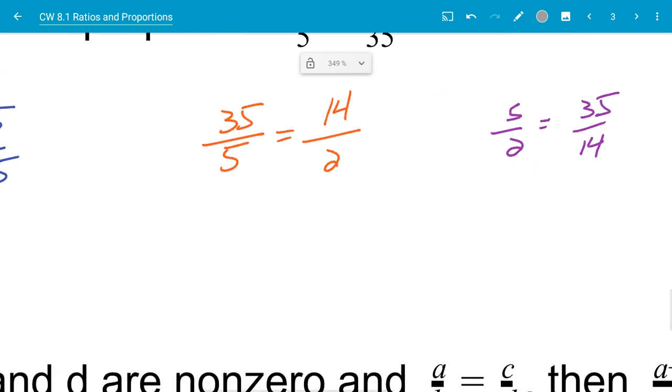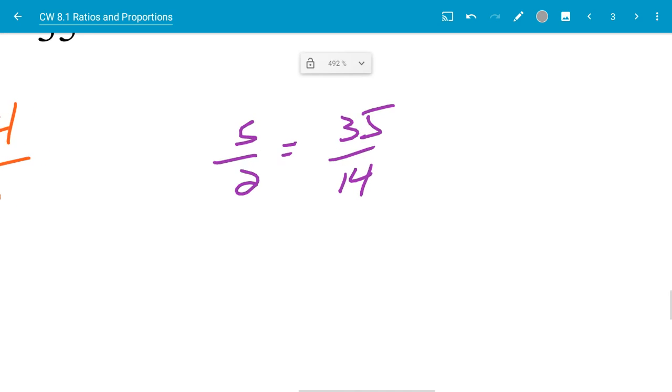On the next one, I have 35 over 5. I can divide both by 5. So that's going to be 7 over 1 is equal to 14 divided by 2 is 7. So I have 7 over 1. So the proportion is still true.